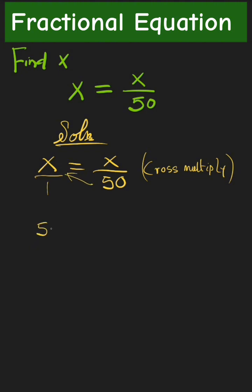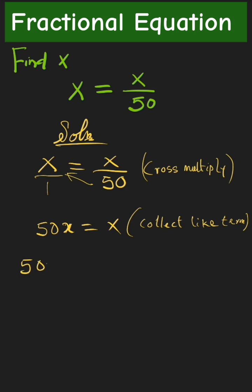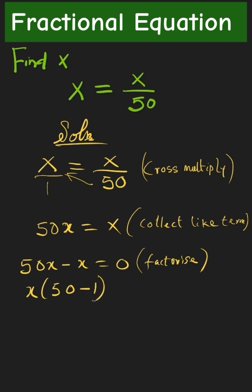This gives us 50x equals x. Then we move x to the other side of the equal sign. We have 50x minus x equals 0. What is common here? What is common is x, so we factor out x: x into 50 minus 1 equals 0.